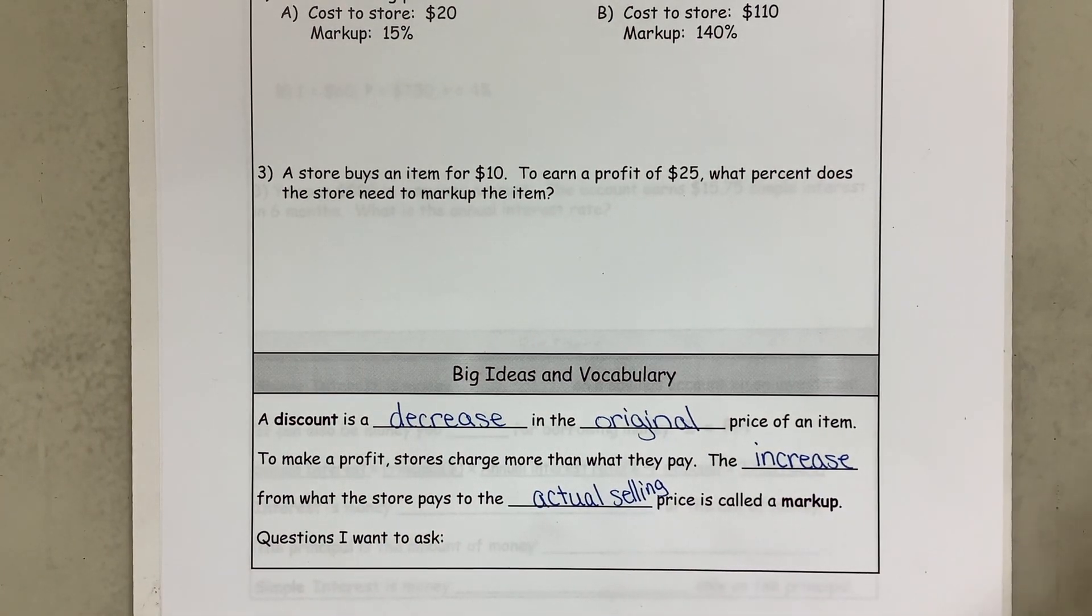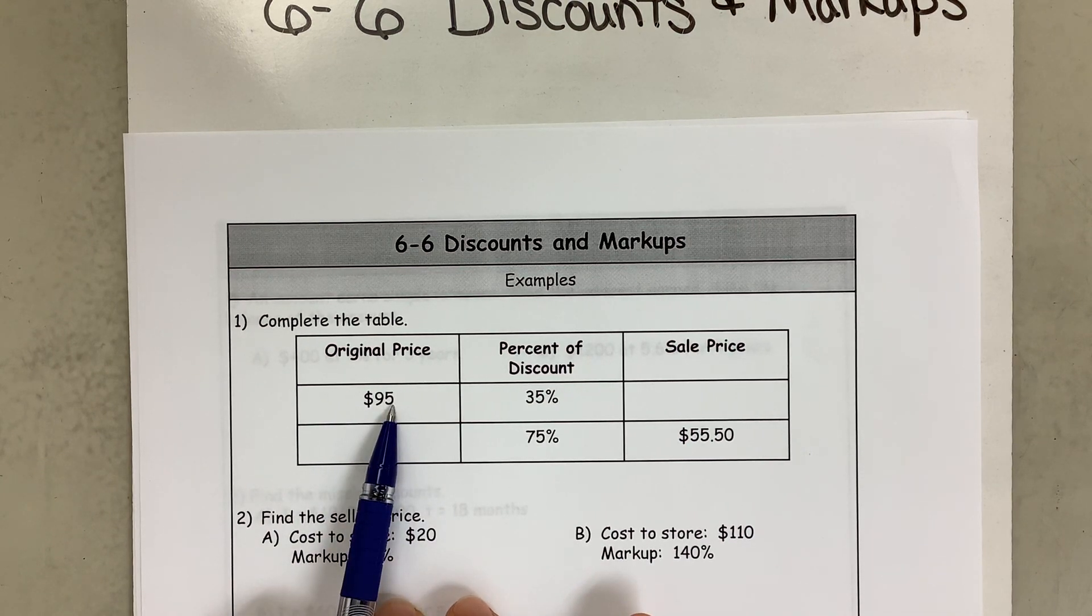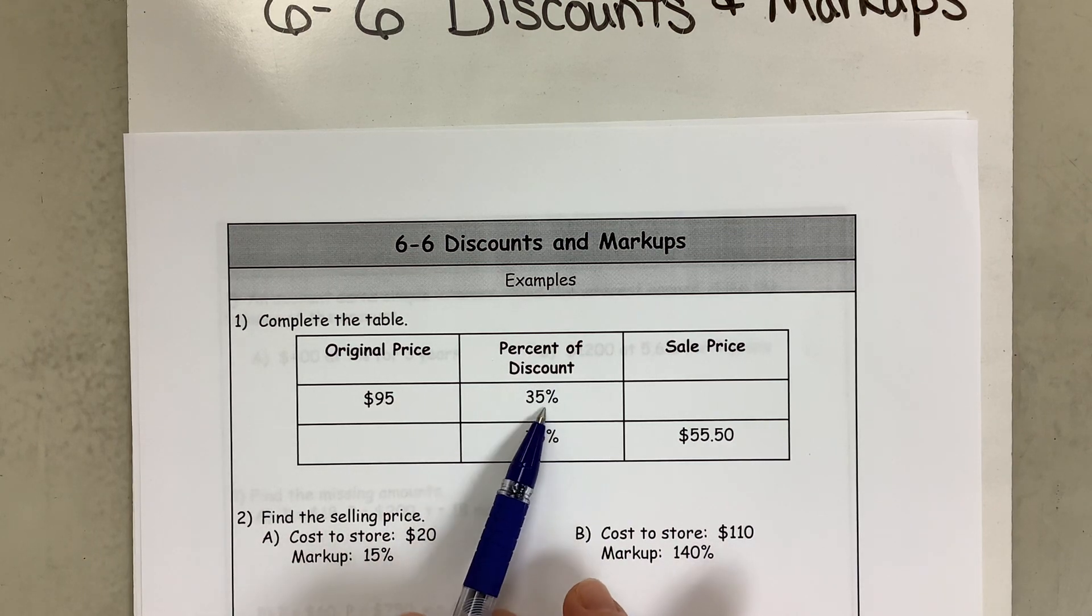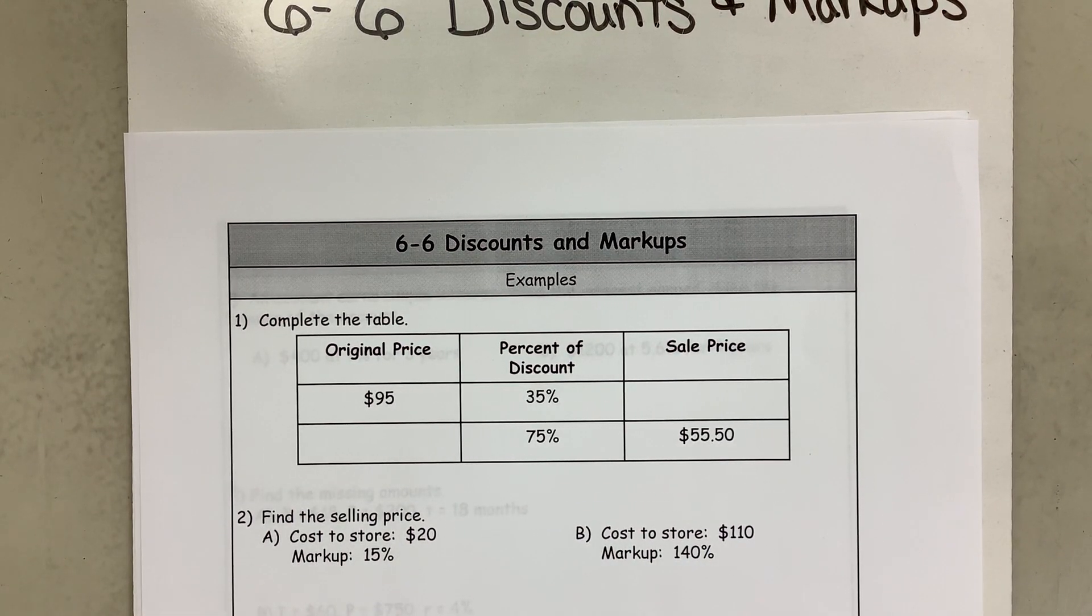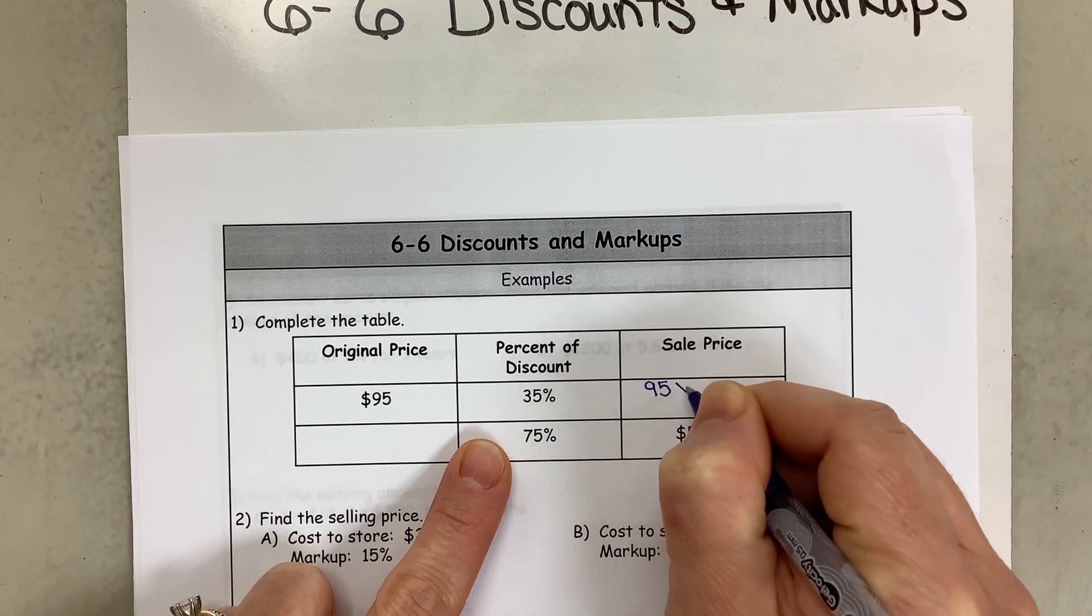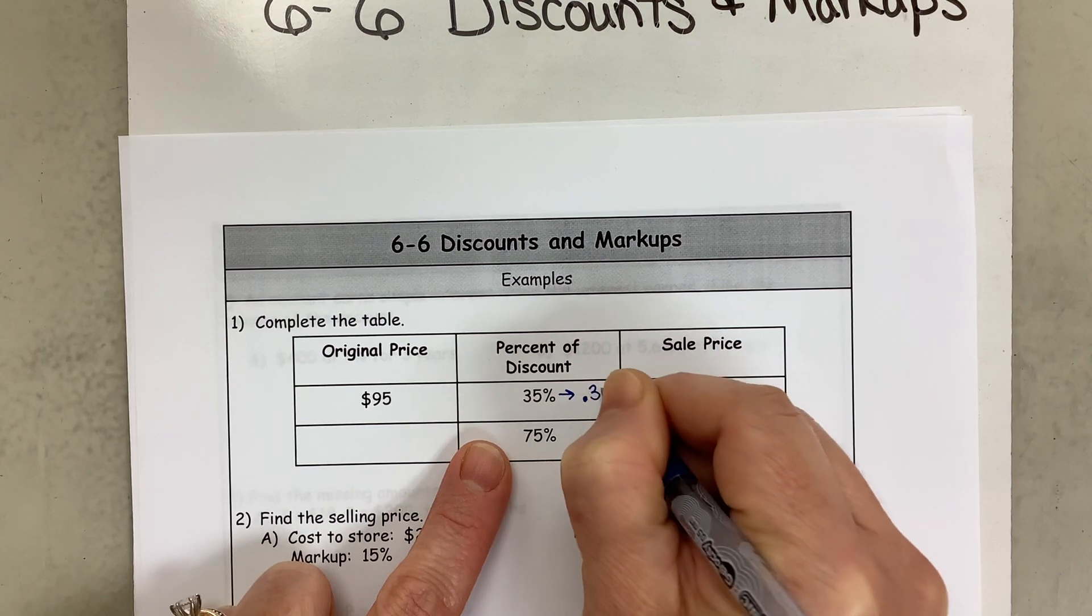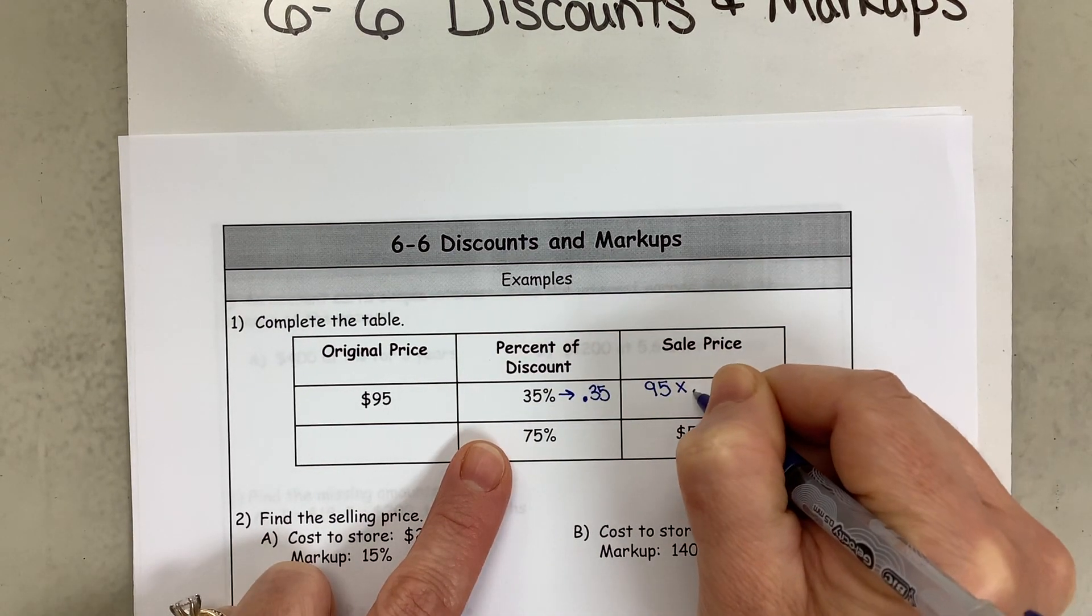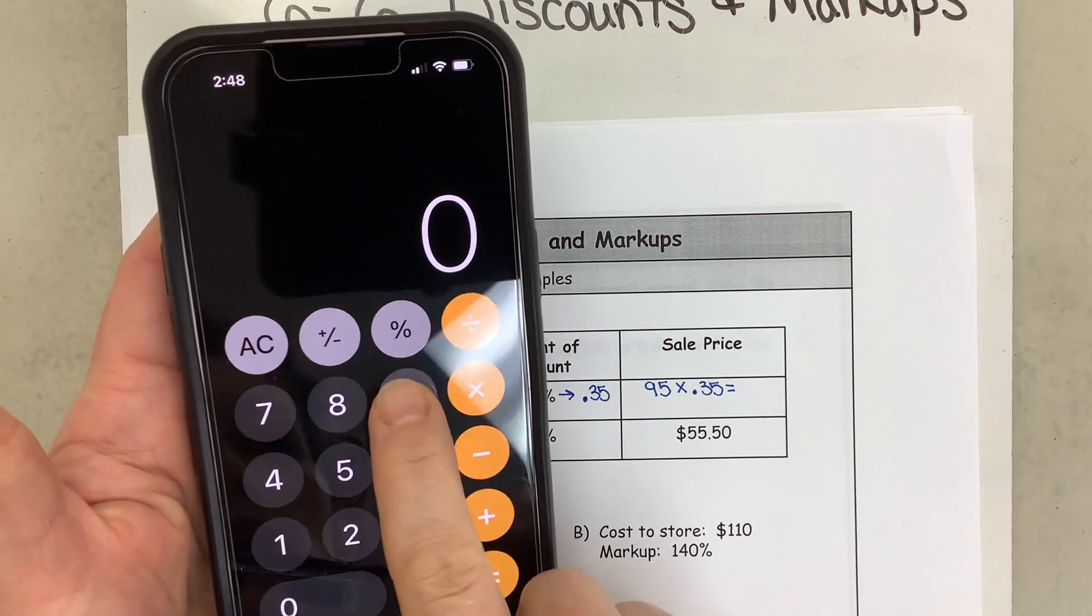So that's what we're going to be talking about today. In this table, the original price of the item was $95. You earned a discount of 35% and we want to figure out the sale price. So what you're going to do is take your original price, the $95, times that 35%. But don't forget 35% we're going to write it as a decimal, so 35 hundredths.